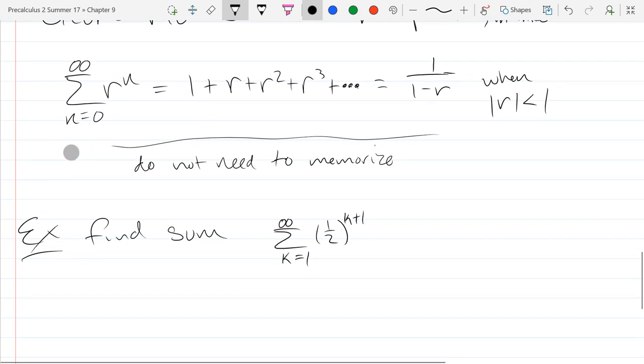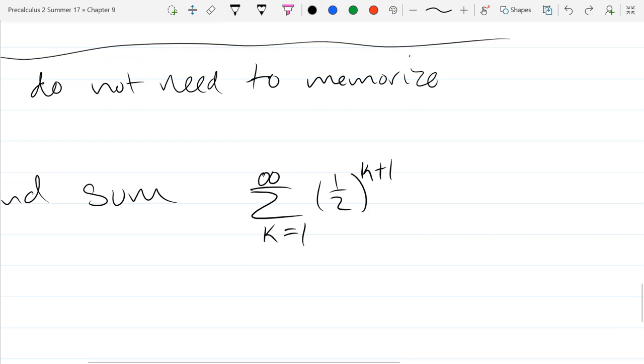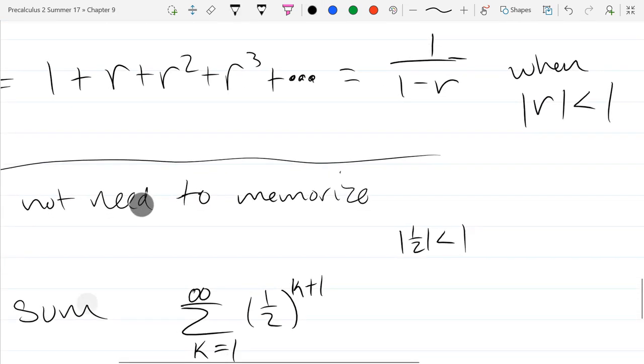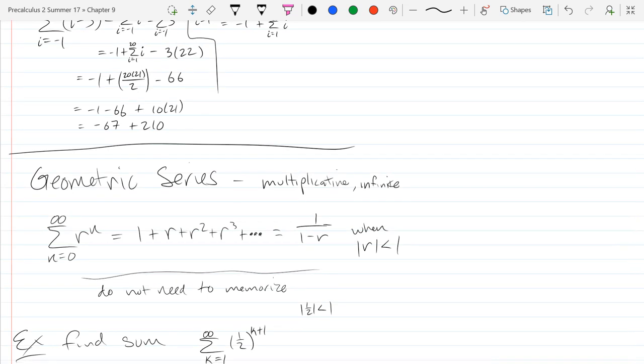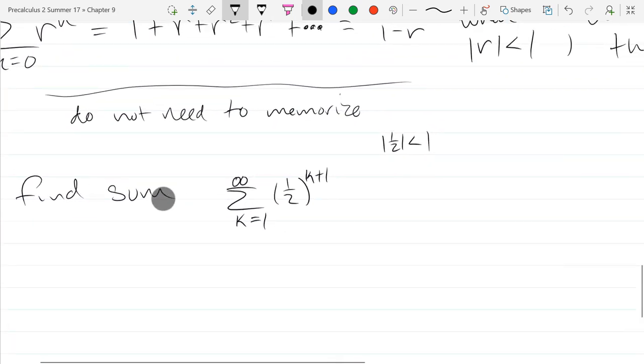Unfortunately we can't just use that formula up top because we don't start at zero and we don't have a k right here. Our r is one half, which is small, so absolute value of one half is less than 1, so no problem - it'll converge. When absolute value of r is greater or equal to 1, the series diverges. So we have convergent, so let's fix these problems.